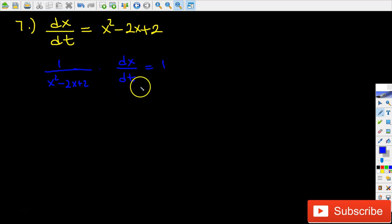Then I would like to get rid of this dt and move it over to another side, so I'm going to multiply each side by dt. Finally, this expression will become dx over x squared minus 2x plus 2 equals dt.